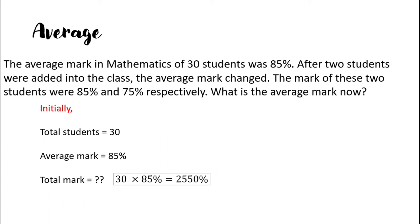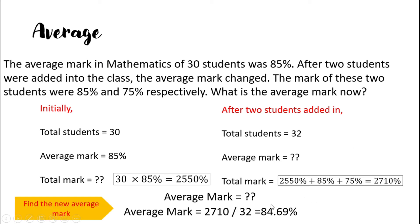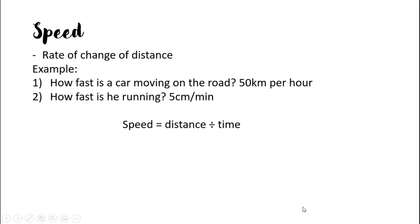Another example: the average mark of 30 students was 85. Two students were added with marks of 85 and 75. The new total student count is 32. Take the initial total marks, add 85 and 75 to get the new total marks, then divide by 32. The new average mark changes to approximately 84.69.